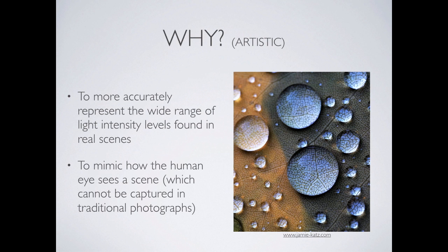We actually see in high dynamic range. We can see the bright spots, switch our gaze back, and see the dark spots. When we take a picture, however, we're stuck at a particular exposure level. We can expose for outside and everything inside becomes too dark, or we can expose for inside and everything outside becomes too bright. Our eyes can see it, but we can't actually photograph it.